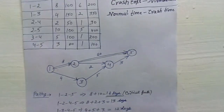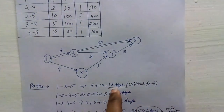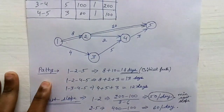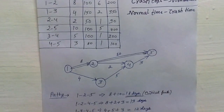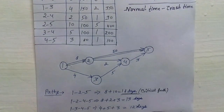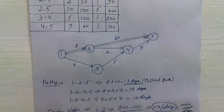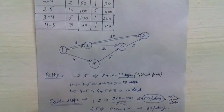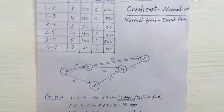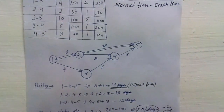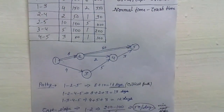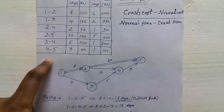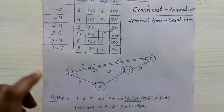Remember that you can only crash those activities which are on the critical path. Be clear — you have to only crash the critical activities. In books sometimes they calculate the cost slope for all activities, but you don't need to do that. Only calculate the cost slope for those activities which lie on the critical path.